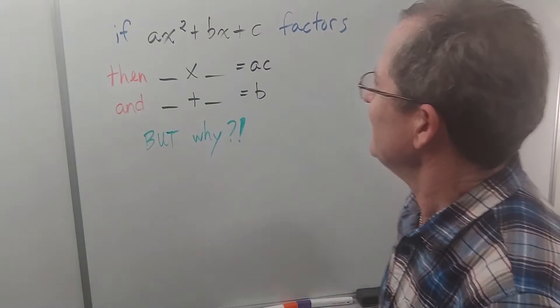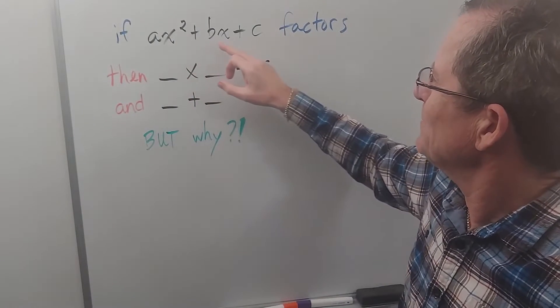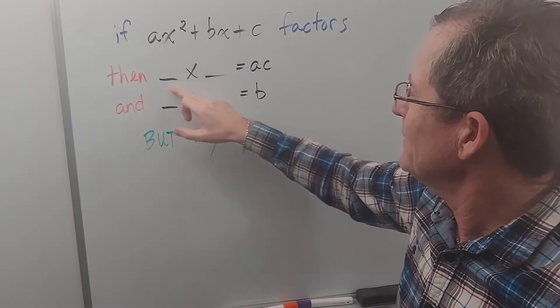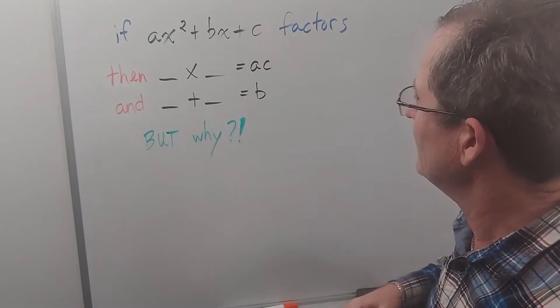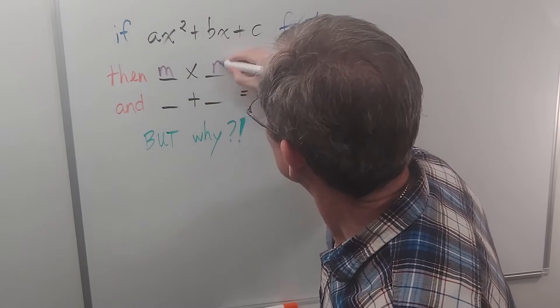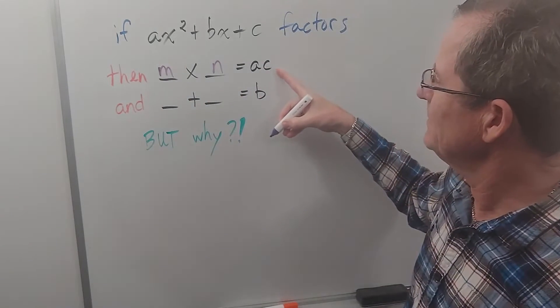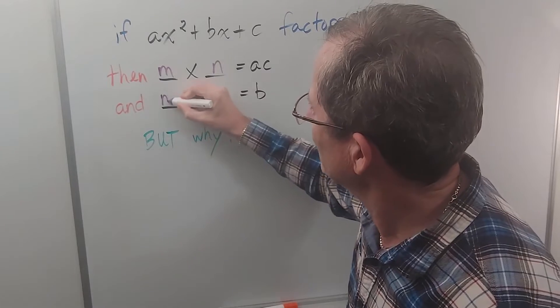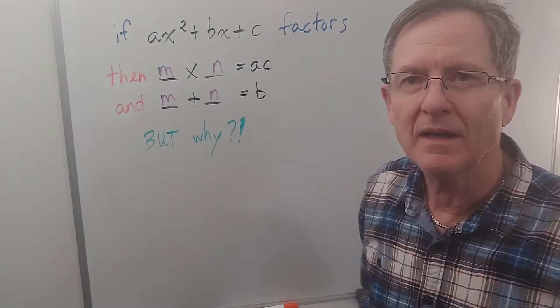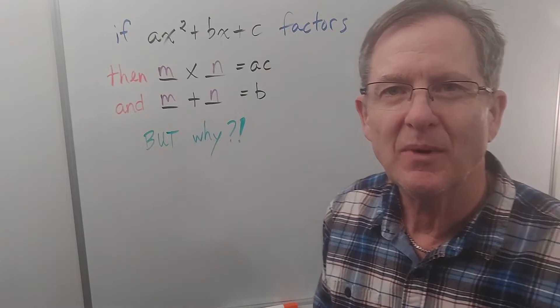Alrighty we know that if ax squared plus bx plus c factors then we have to find two numbers, let's call them m and n, that multiply to a times c and that add up to b. But why? Why is that?